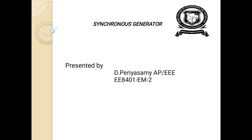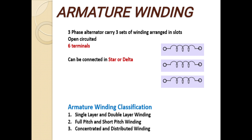Today we are going to discuss the topic of armature winding. In a 3-phase synchronous generator, 3 different sets of windings are arranged in the armature, and the phase difference between each winding is 120 degrees. Thus, the 3-phase induced EMF has 3 different EMFs given by: ER = EM sin(ωt) for R phase, EY = EM sin(ωt) for Y phase, and EB = EM sin(ωt) for B phase. The induced EMF in each set of winding is called phase EMF, denoted by E-phase.